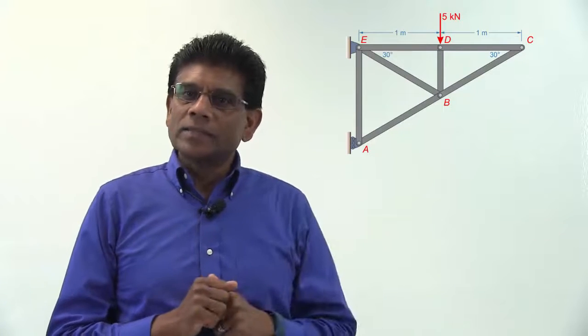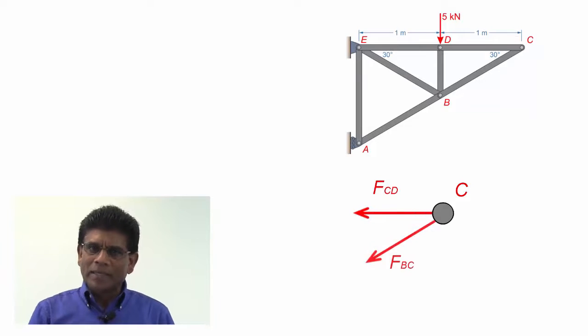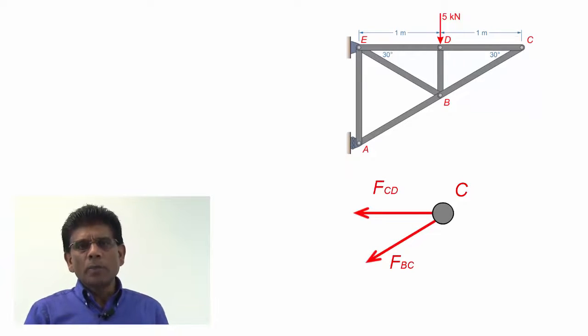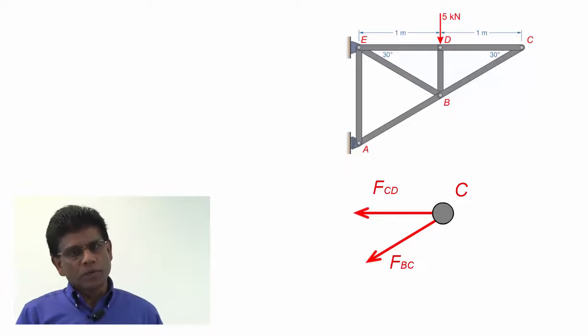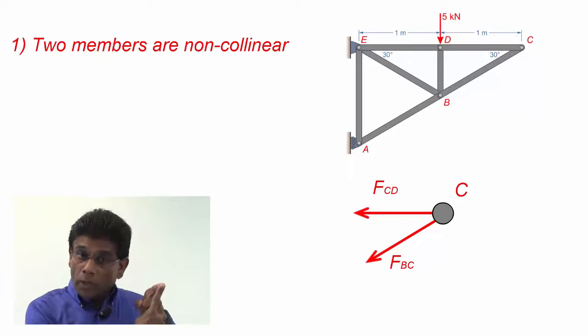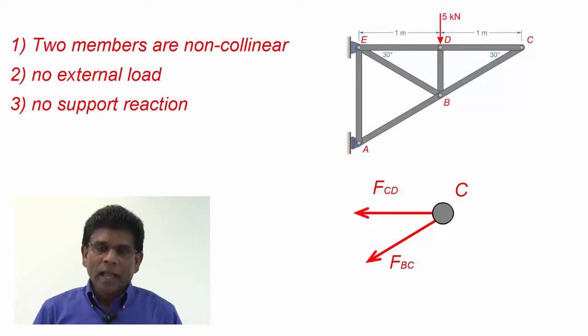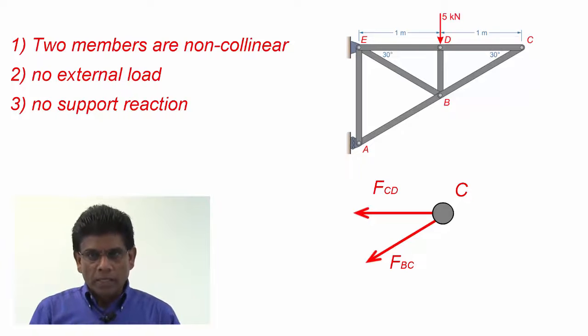Okay, take a look at joint C in this case. Joint C connects two members, CD and BC. Notice these two members are not collinear. They form an angle. Also, notice there is no pin or roller support at this joint. This means joint C has no support reactions. There is also no applied or external load at this joint. So, there are three conditions. One, two members are non-collinear, no external load, and no support reaction.